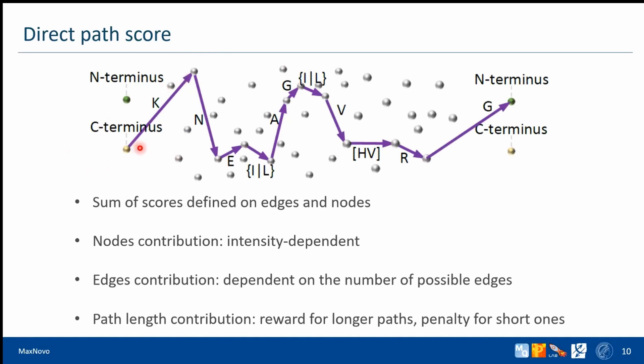Edge contribution is dependent on the number of possible edges from the same node. If we can construct only one edge from a particular node, we're sure that this is the right path. However, if we can construct five edges from the same place, we're not so sure, and whatever edge we choose gets a lesser score. It is also much easier to construct two amino acid steps than one amino acid steps, so we penalize two amino acid steps compared to one amino acid steps.